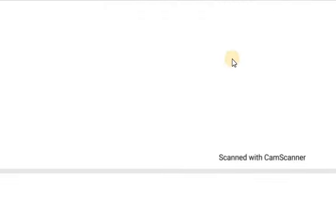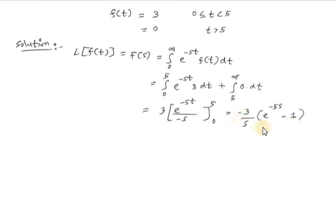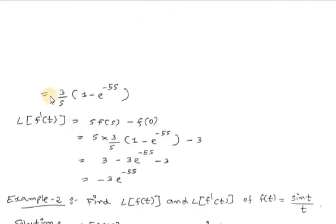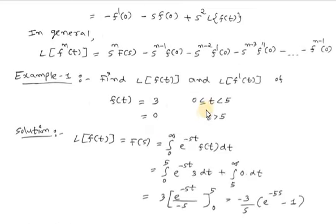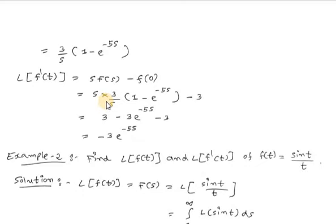Now we find Laplace of f'(t) using the formula s·F(s) minus f(0). F(s) is 3(1 - e^(-5s))/s. Since f(0) = 3 (because f(t) = 3 for t in [0,5]), we have s times 3(1 - e^(-5s))/s minus 3, which simplifies to 3(1 - e^(-5s)) minus 3 = 3 - 3e^(-5s) - 3. So the final answer for Laplace of f'(t) is -3e^(-5s).